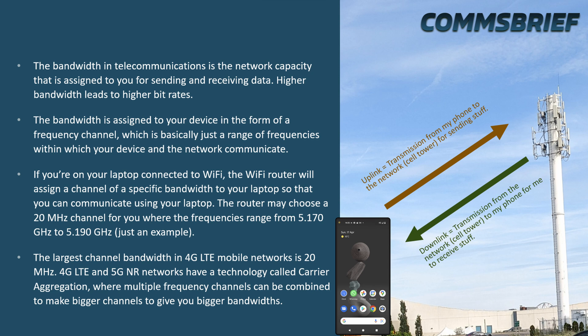The bandwidth in telecoms is the network capacity that is assigned to you for sending and receiving data. Higher bandwidth leads to higher bit rates. So if you're doing a video call with someone on WhatsApp, your video quality will likely be poor if you don't get enough bandwidth. On the other hand, if you get higher bandwidth, the call quality will likely be better. The bandwidth is assigned to your device — for example, your phone — in the form of a frequency channel, which is basically a range of frequencies within which your device and the network communicate.